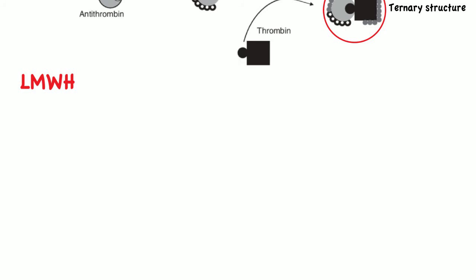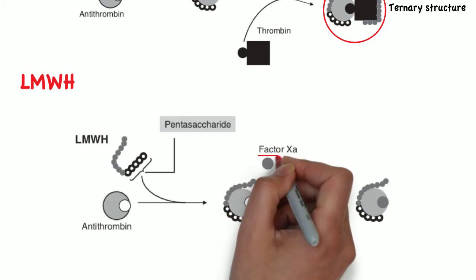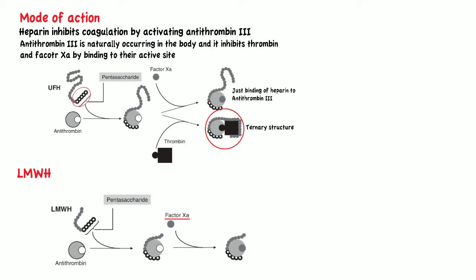Low molecular weight heparins increase the action of antithrombin-3 on factor Xa, but not on thrombin, as the molecules are too small to form a ternary structure with thrombin and antithrombin.